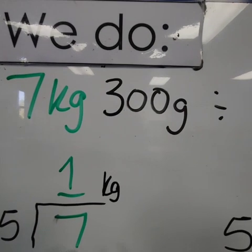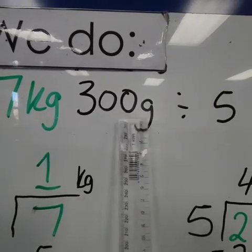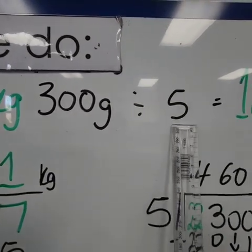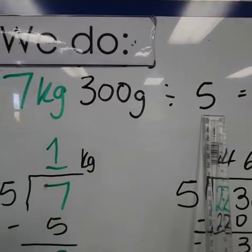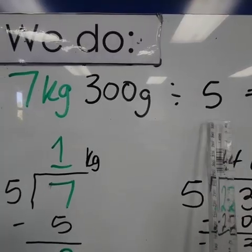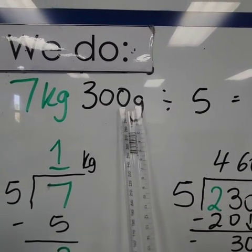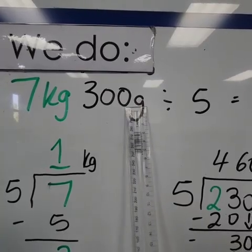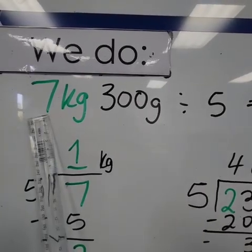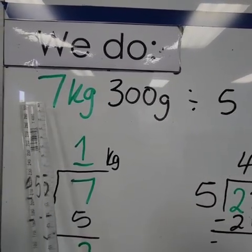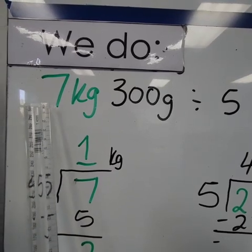So here we have an equation: 7 kilograms, 300 grams divided by 5. So as in the previous video, we never start on the far right side. We always start from the biggest unit of measure on our left.